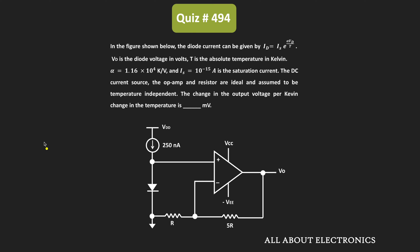Hey friends, welcome to the YouTube channel All About Electronics. So in this question, we have been given this open-based circuit and here we have been given that the diode current in the circuit can be given by this expression. That is equal to Is times e to the power α times Vd divided by T, where Vd is the diode voltage and T is the absolute temperature in Kelvin.